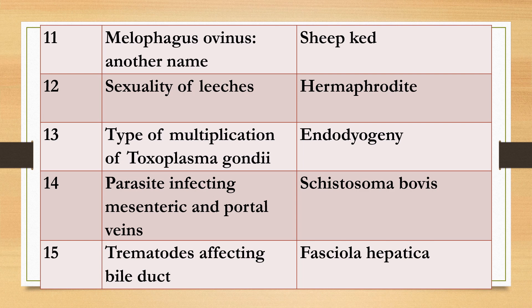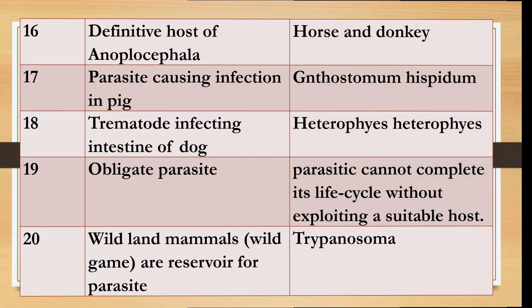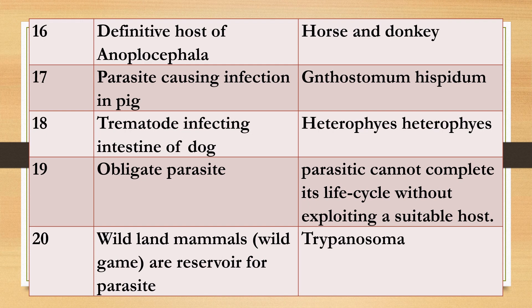Question fifteen: Trematodes affecting the bile duct — a very common question. Answer: Fasciola hepatica. Question sixteen: Definitive host of Anoplocephala. Question seventeen: Gnathostoma infection in pigs — answer: Gnathostomum hispidum. Question eighteen: Trematode infecting intestine of dogs. Answer: Heterophyes.